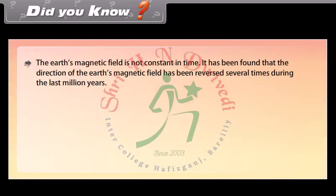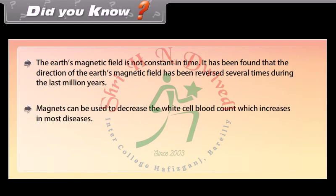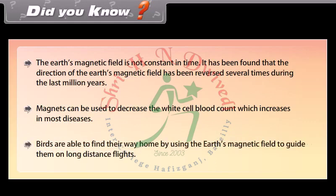Did you know: Earth's magnetic field is not constant in time — its direction has been reversed several times during the last million years. Magnets can be used to decrease the white blood cell count, which increases in most diseases. Birds are able to find their way home by using the Earth's magnetic field to guide them on long distance flights.